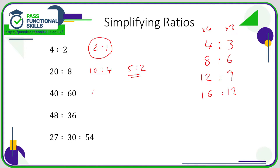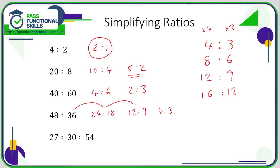Forty to sixty simplifies to four to six — we've just chopped off a zero, which means we've divided by ten — and that simplifies again to two to three. For forty-eight to thirty-six, I'm just going to halve the numbers rather than stress about whether nines or eights go into them. That gives twenty-four to eighteen; half it again to twelve to nine. I can't halve it now, but I can divide by three to get four to three. It's better to simplify in stages rather than trying to find the biggest number straight away, but if your tables are strong and you know both numbers are in the twelves, dividing by twelve takes you directly to four to three.